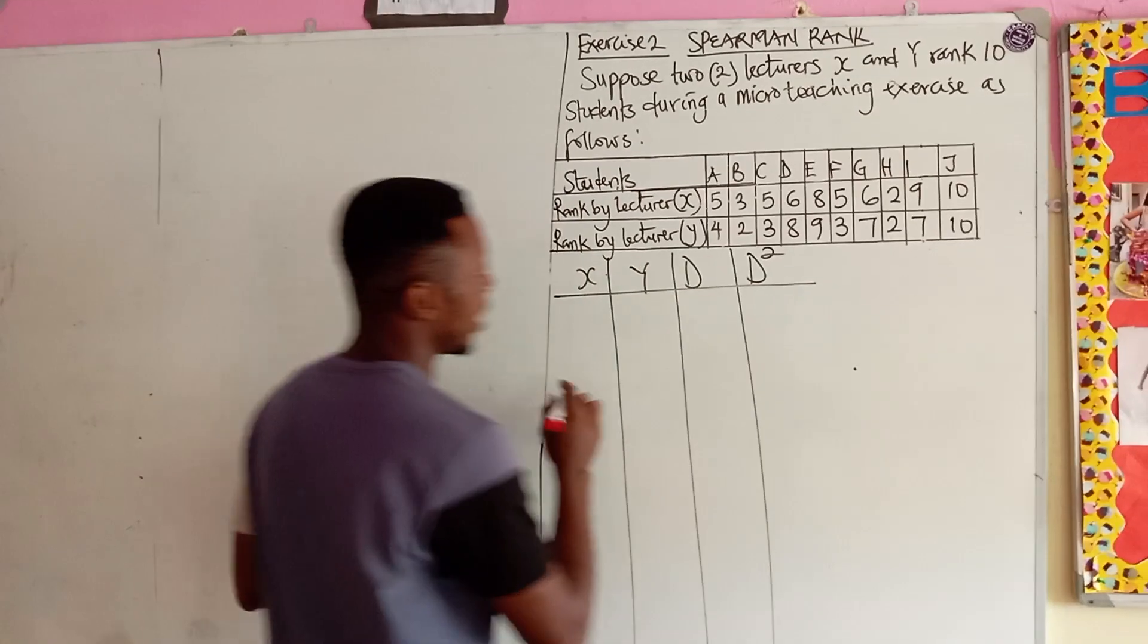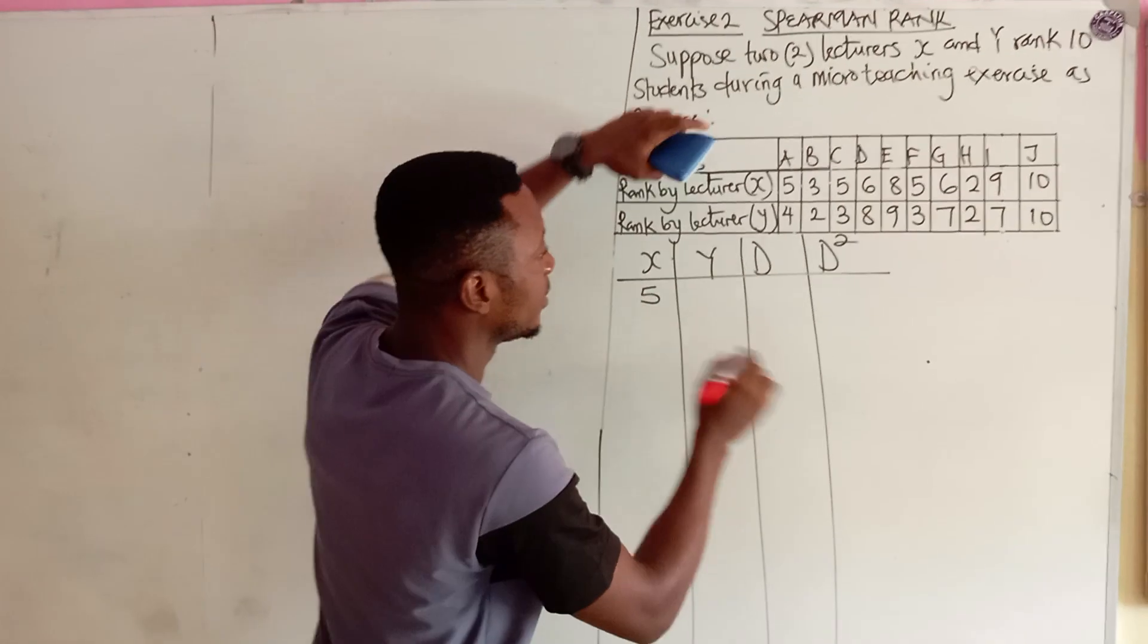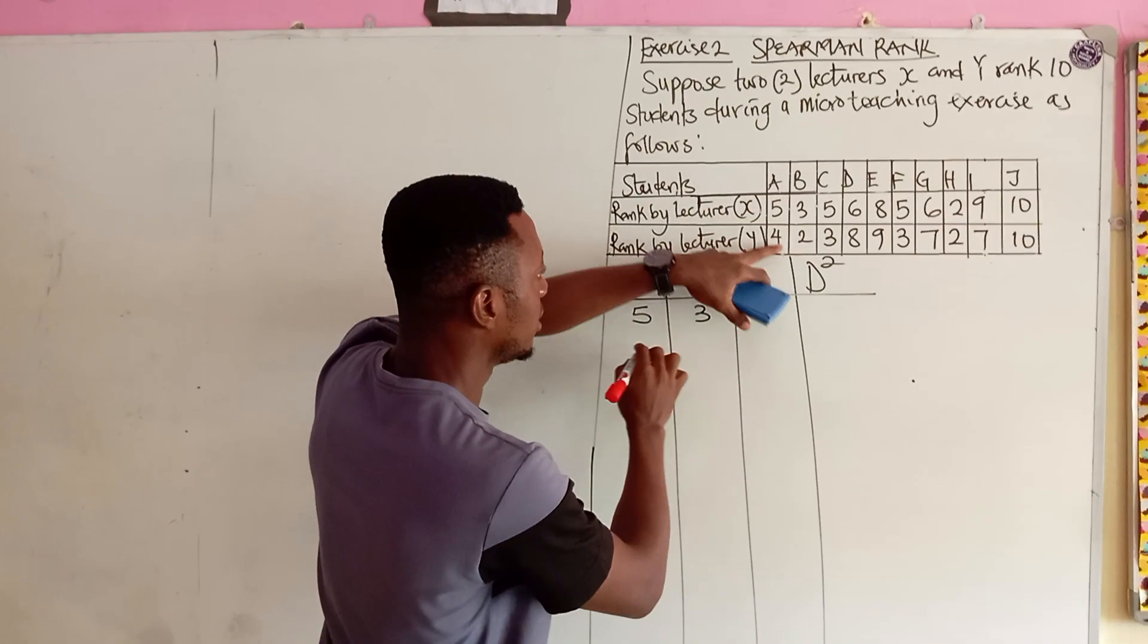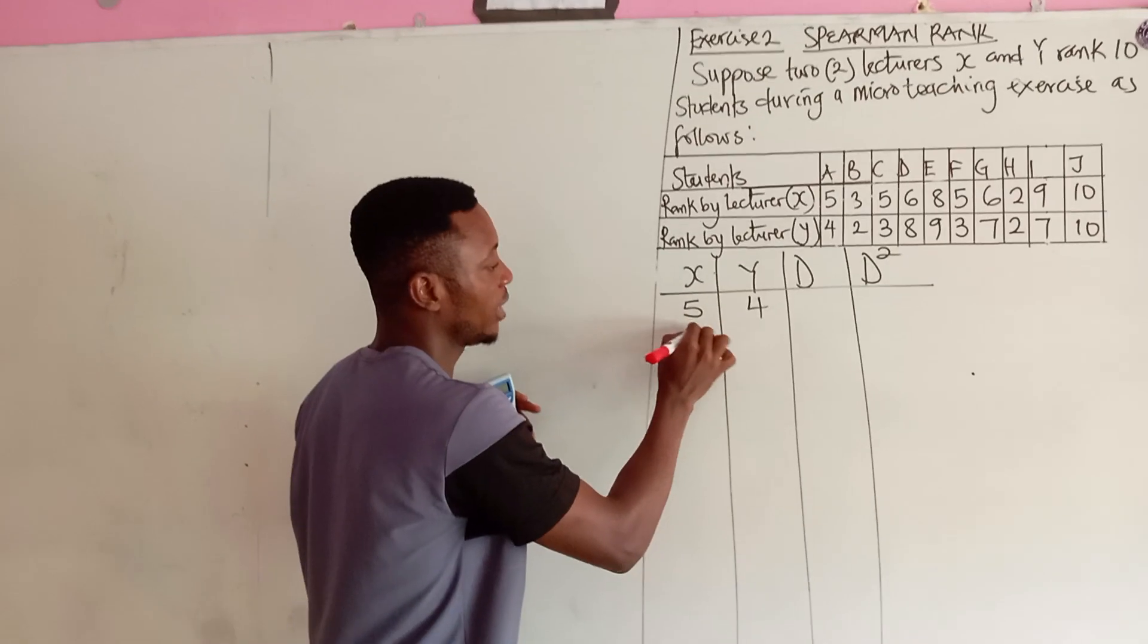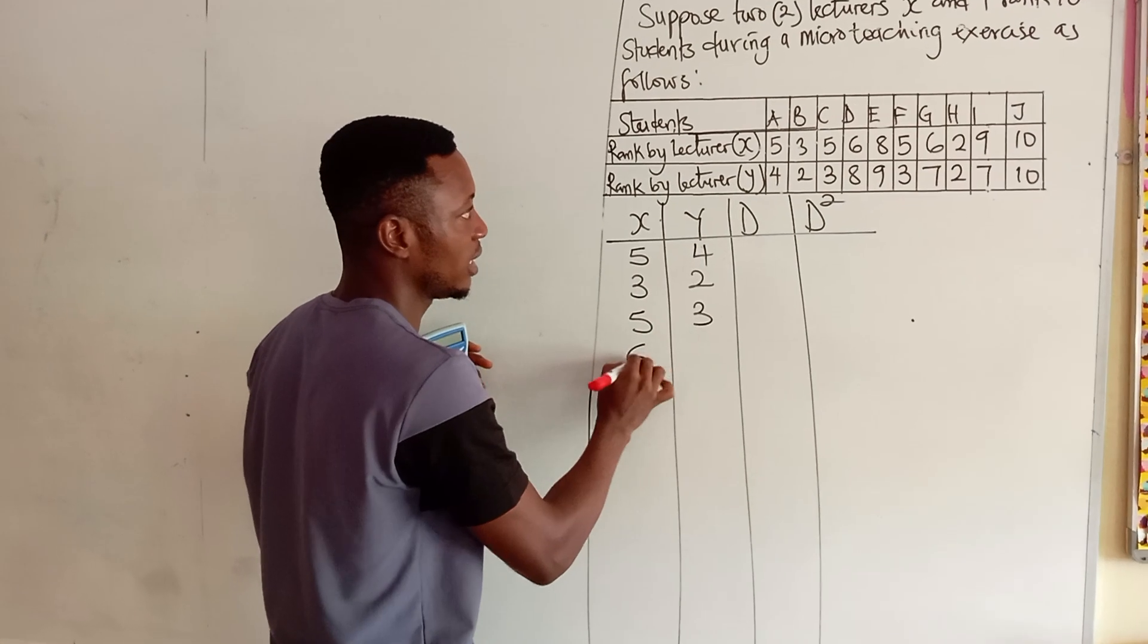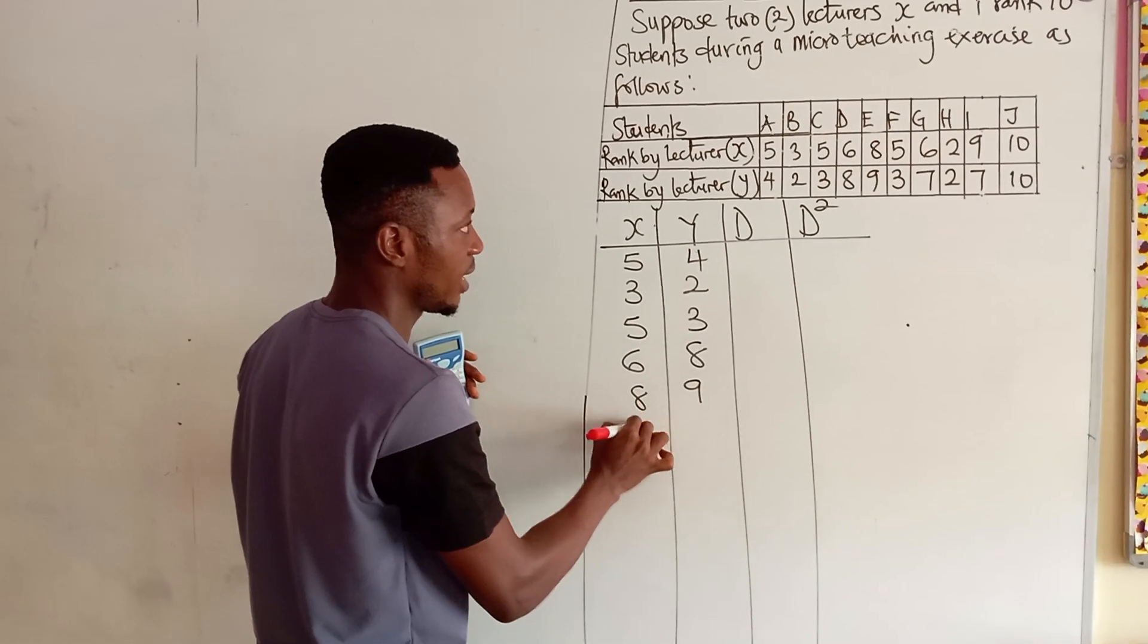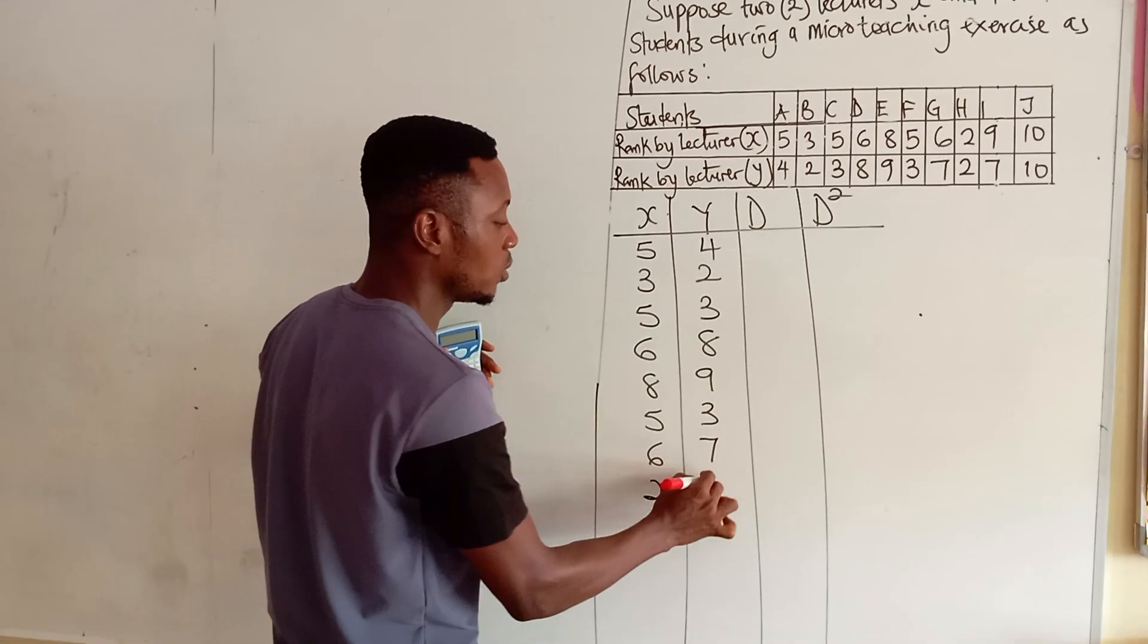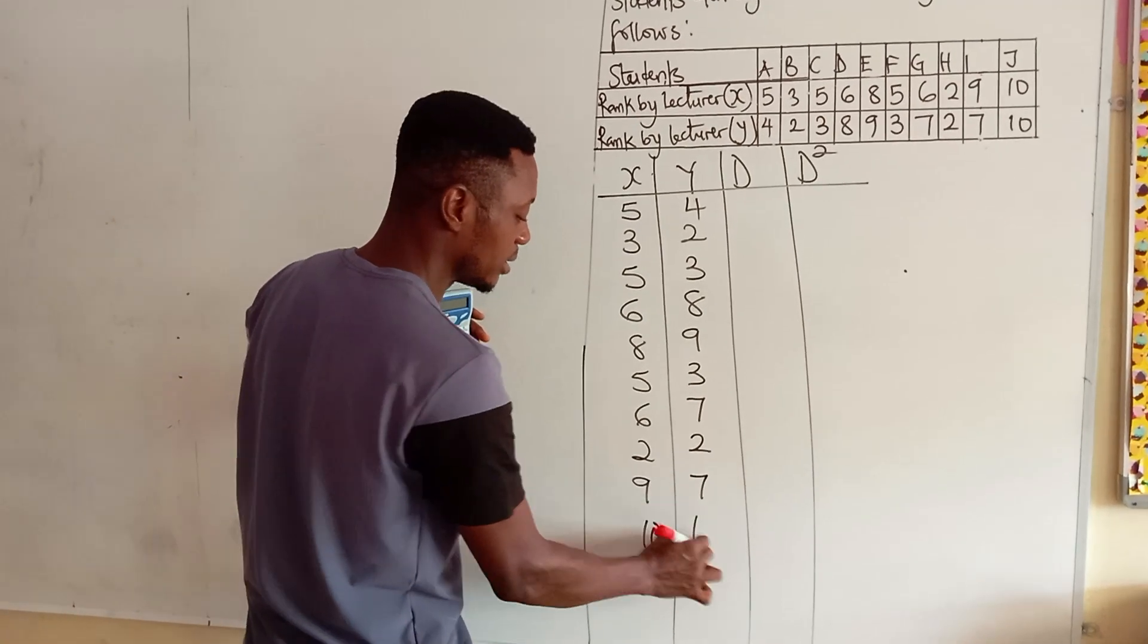In my X, we have, when X is 5, Y is 4, X is 3, Y is 2, we have 5, 3, 6, 8, 8, 9, 5, 3, 6, 7, 2, 2, 9, 7, 10, 10.